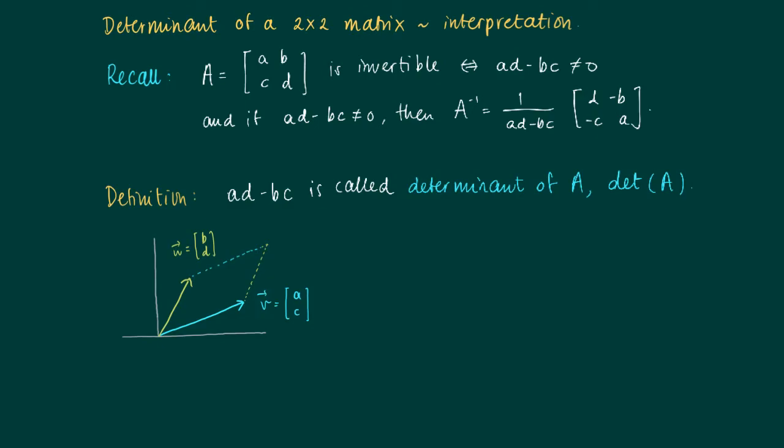So here we have a picture. We have a vector v equals (a, c) and w equals (b, d). So we can write A as the concatenation of two vectors v and w.